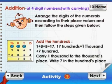Add the hundreds. 1 plus 8 plus 8 is equal to 17. 17 hundreds is equal to 1 thousand plus 7 hundreds. Carry 1 thousand to the thousands place. Write 7 in the hundreds place.